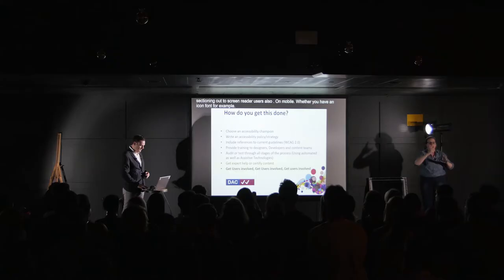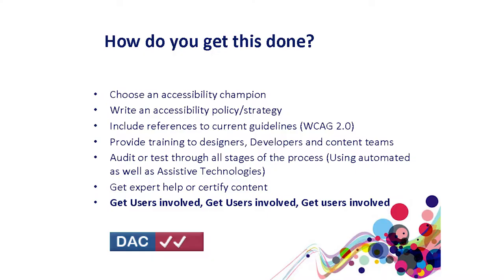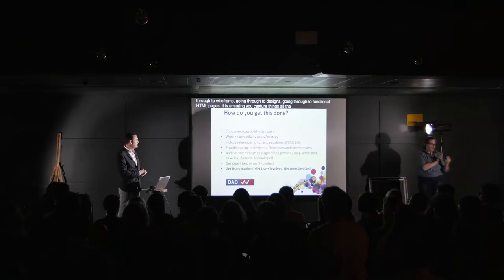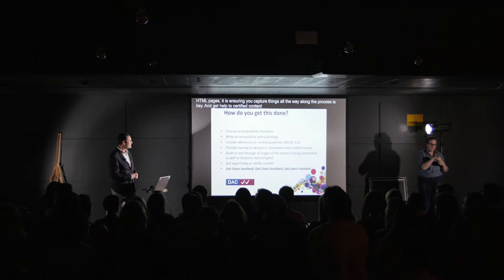How do you get this done? Within your organisation, consider having an accessibility champion — if not, you could be that champion. Write an accessibility policy and strategy with references to guidelines, provide training internally to designers, developers, and content teams, and audit and test through all stages — even using automated software. QA teams can use tools like Selenium or Cucumber with JavaScript accessibility libraries to catch issues early, through wireframes, designs, and functional HTML pages. Getting users involved is key — if you're trying to make something accessible to a user group, involve that user group.